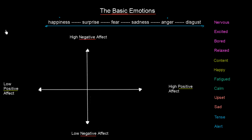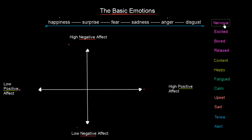Let's start. We have four emotions: nervous, excited, bored, and relaxed. Let's try to place them at the ends of our dimensions — most positive, most negative, lowest positive, and lowest negative. Where do we place nervous? Most likely you are nervous when something has a very high negative effect on you. So let's place nervous at the high negative end.